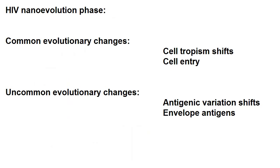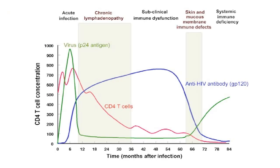I've demonstrated both common and uncommon evolutionary changes on the nanoscale during a single infection in a single patient. What about the microevolutionary changes? Here I'm talking about the variation in HIV since it first jumped to humans sometime at the beginning of the previous century, between 1900 and 1950.